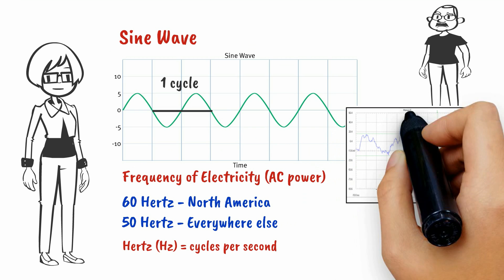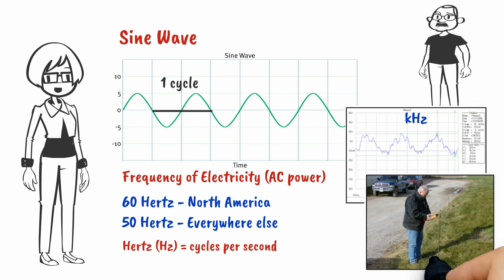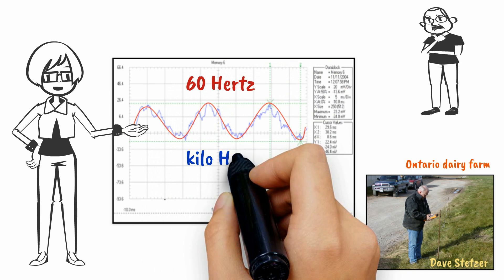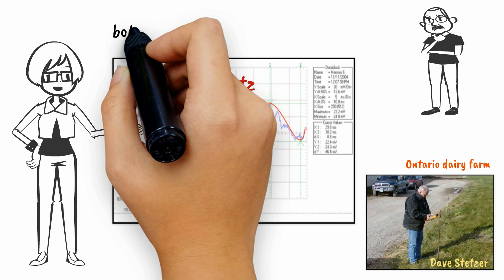But if you recall, we saw higher frequencies flowing along the soil on Dave's scope meter. These higher frequencies have different properties and different biological effects. It is important to realize that 60 Hz and kHz frequencies can be present on farms.